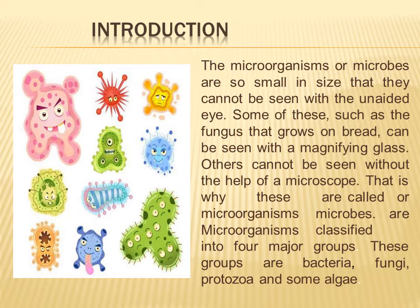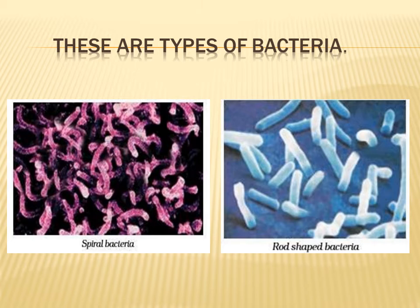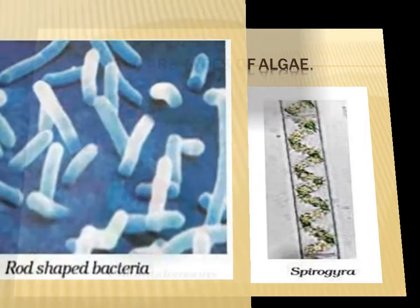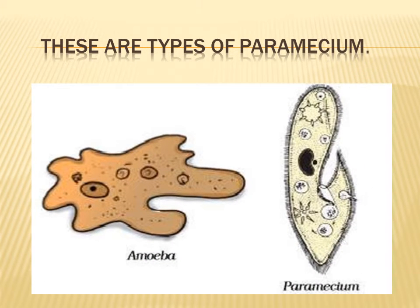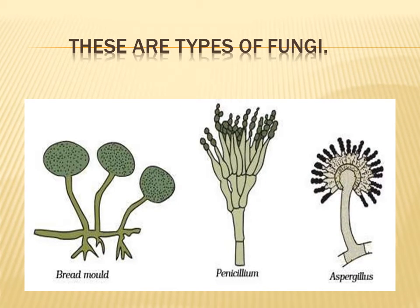Microorganisms are classified into four major groups. These groups are bacteria, algae, paramecium, and fungi. Protozoa and many other common microorganisms are also found in the environment.